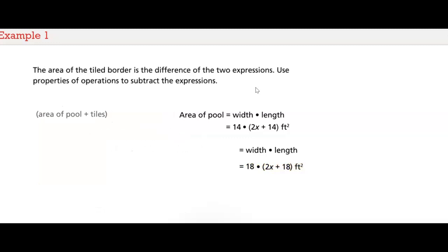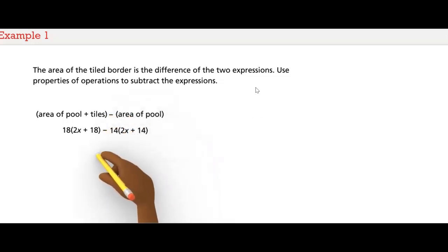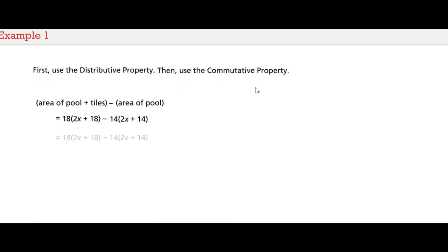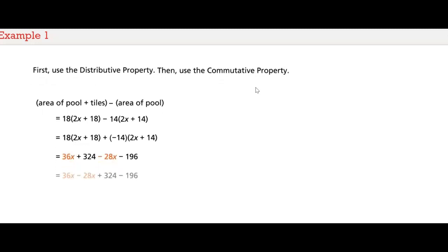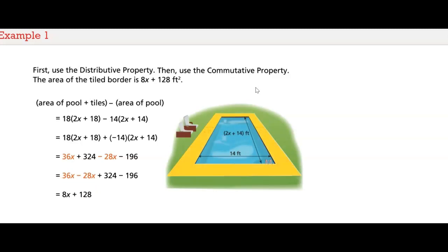The area of the tile border is the difference of the two expressions. We need to use properties of operations to subtract the expressions and simplify the result. Rewrite the expression — first use the distributive property, then use the commutative property, and simplify. The area of the tile border is 8x + 128 square feet.